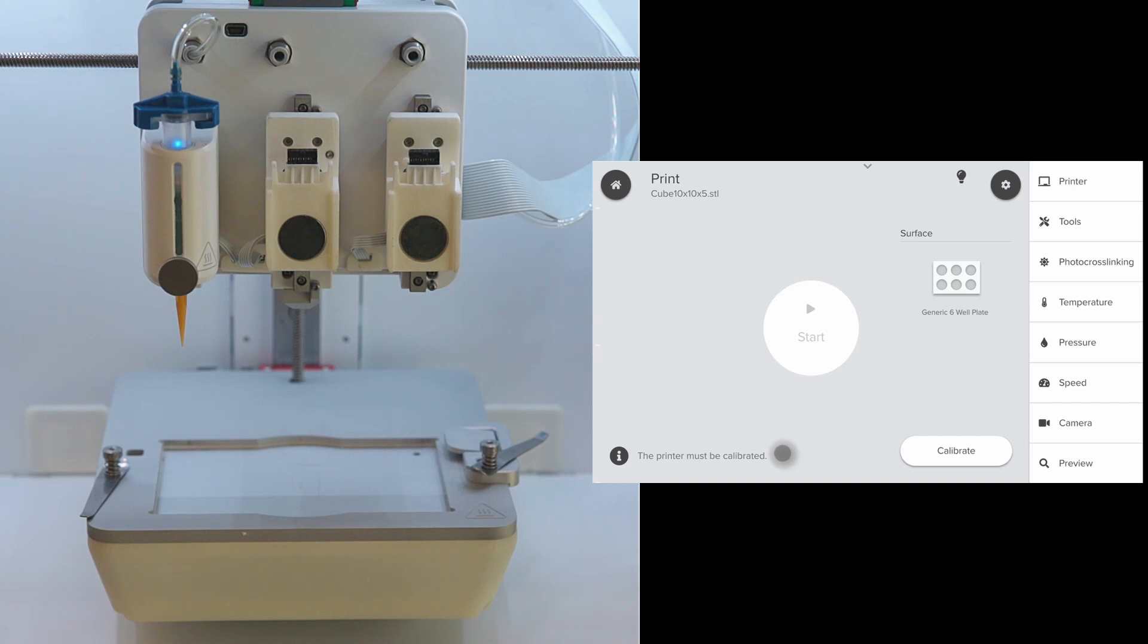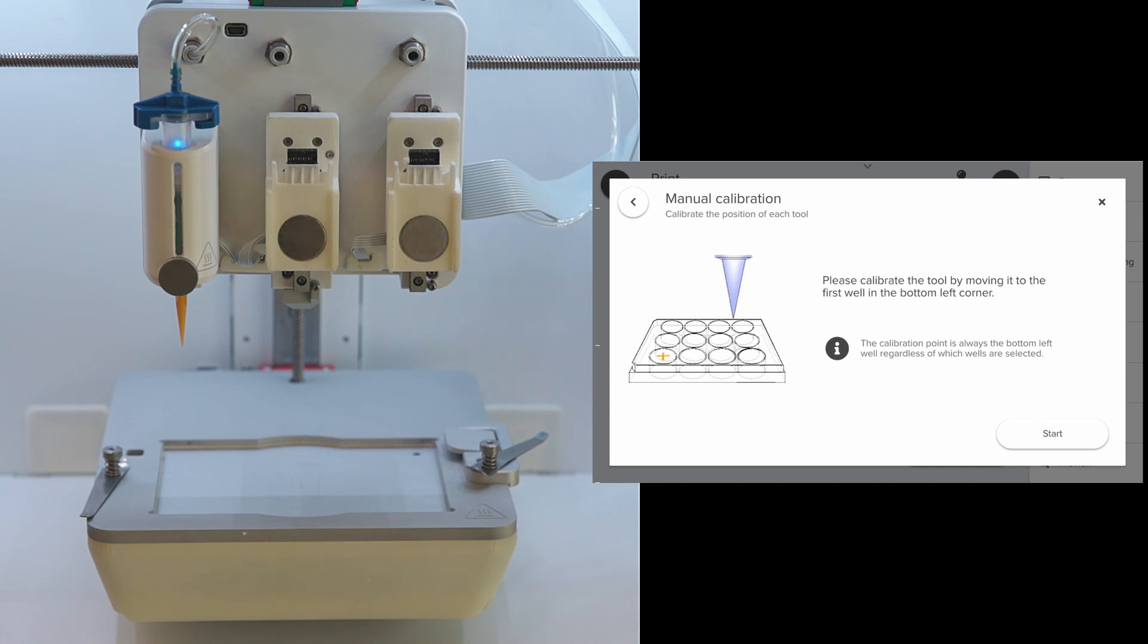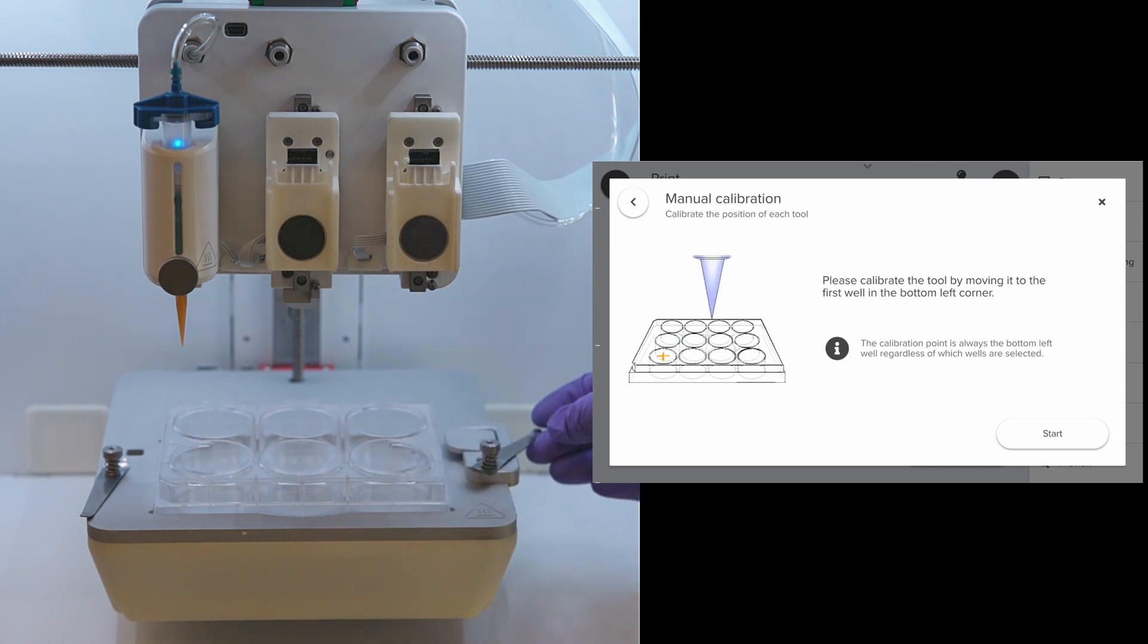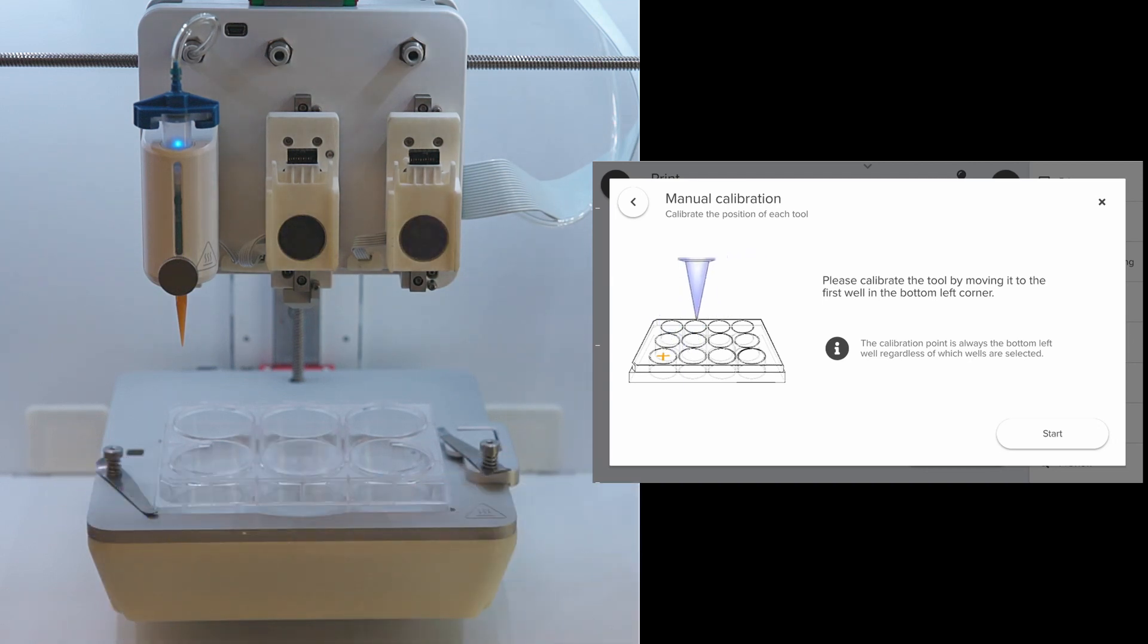Before we can start printing, we have an error message that the printer must be calibrated. To calibrate, click on calibrate and click on manual calibration. A figure is displayed showing how the calibration is to be done. We need to place the tip of the needle in the first well, which is the bottom left well of the multi-well plate. Place our 6-well plate on the print bed. We can use these metal flaps to hold the 6-well plate in place. Click start to manually calibrate the printer.